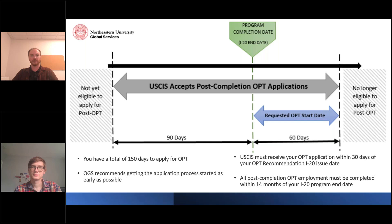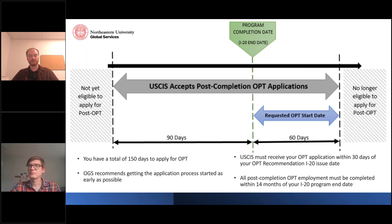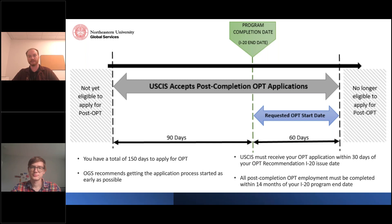You have a 150-day window to apply for OPT. This consists of a 90-day window prior to your program end date — so roughly three months before graduation — plus the 60-day grace period after. Apply early: our office takes 10 to 15 business days to process and issue your I-20, and USCIS processing can take anywhere from one month to several months. Applying early gives you much more flexibility and prevents last-minute complications.